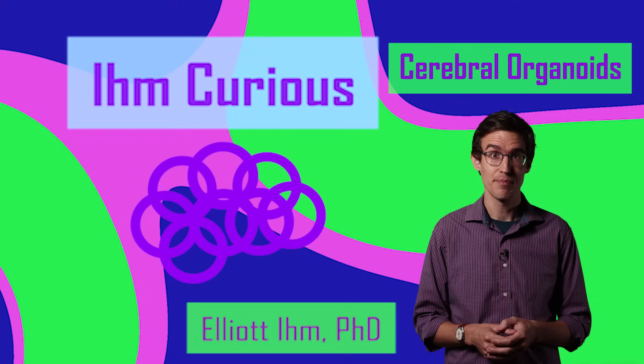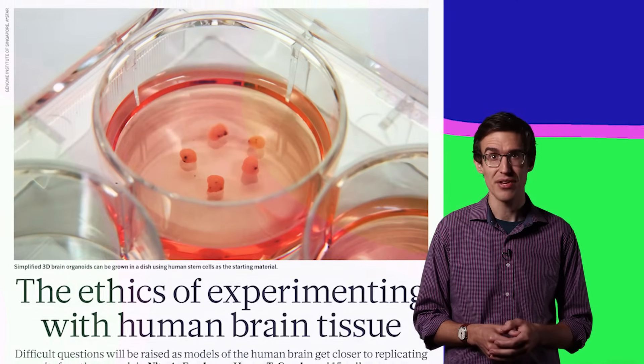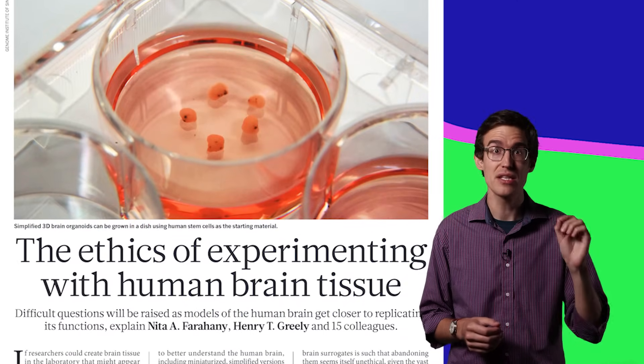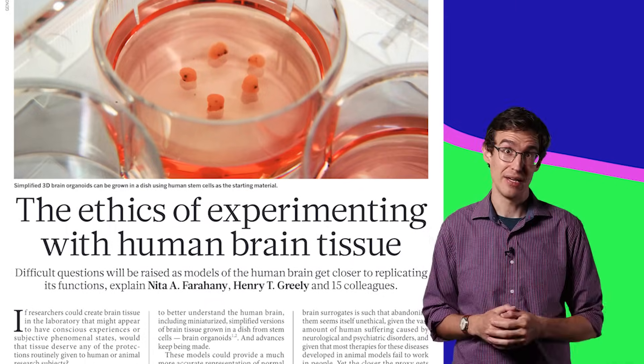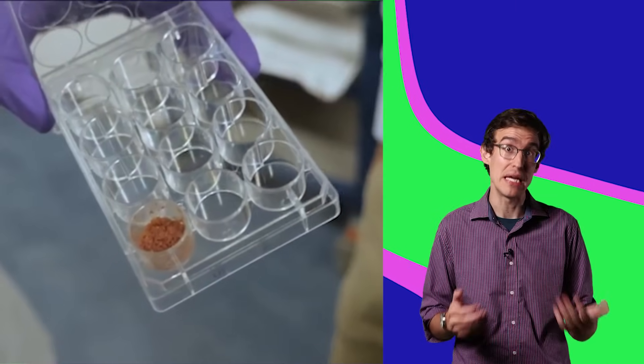About cerebral organoids. Also known as mini-brains, they're tiny blobs of real brain tissue that you grow in a lab. It's similar to how you make lab-grown meat.